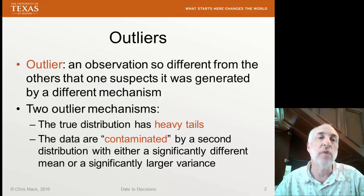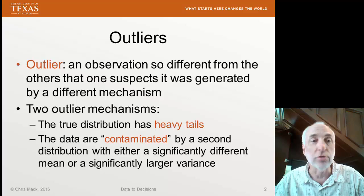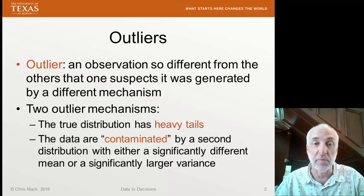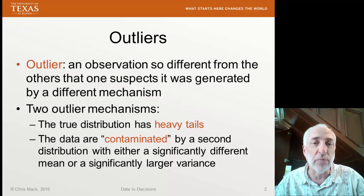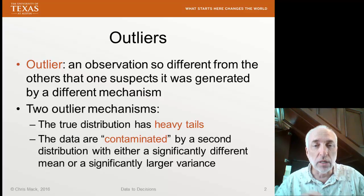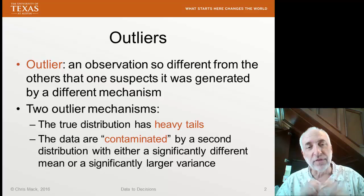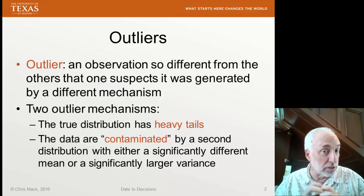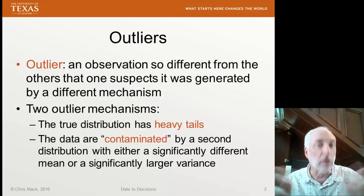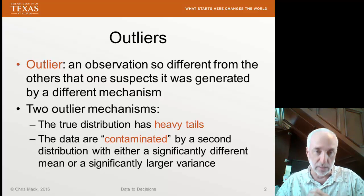Recall that last time we defined an outlier as an observation so different from the others that we suspect it was generated by a different mechanism. What are the potential outlier mechanisms? In terms of probabilities and probability distributions, we often say there are two kinds of outlier mechanisms.